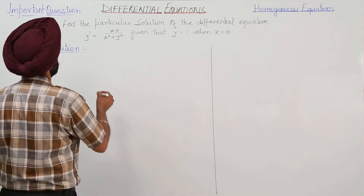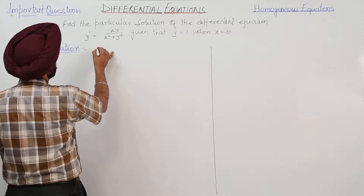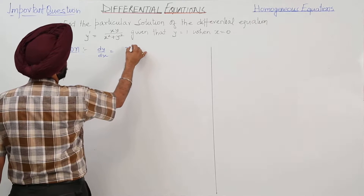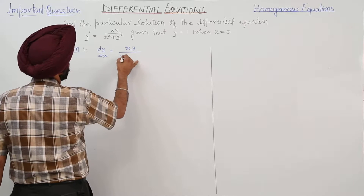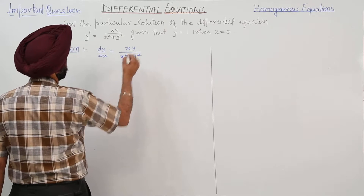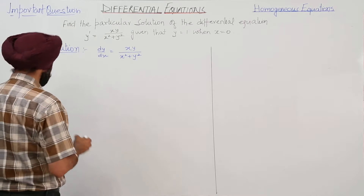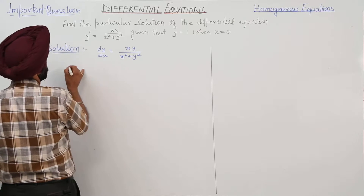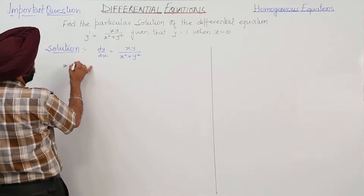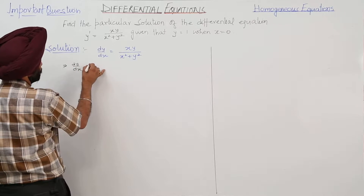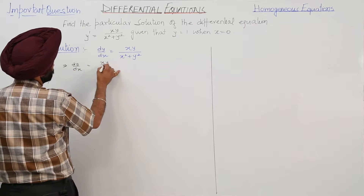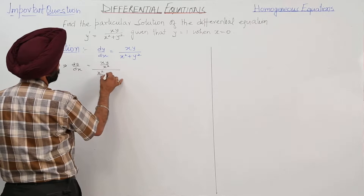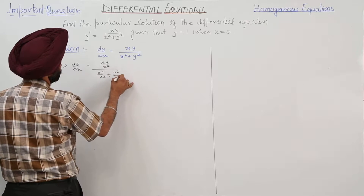Next, a very important question. The question is dy/dx = xy / (x² + y²). To make it homogeneous, we are dividing the numerator and denominator by x². So dy/dx equals (xy/x²) divided by (x²/x² + y²/x²).